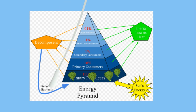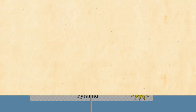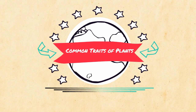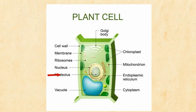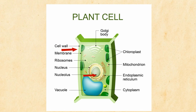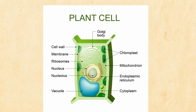Let's discuss a couple of traits that all plants have in common. First, since they are eukaryotic they have a nucleus. The cells of plants have a cell wall made of cellulose. This cell wall provides protection and gives the plant cell shape. Plant cells also have a large central vacuole where it stores water and other materials.